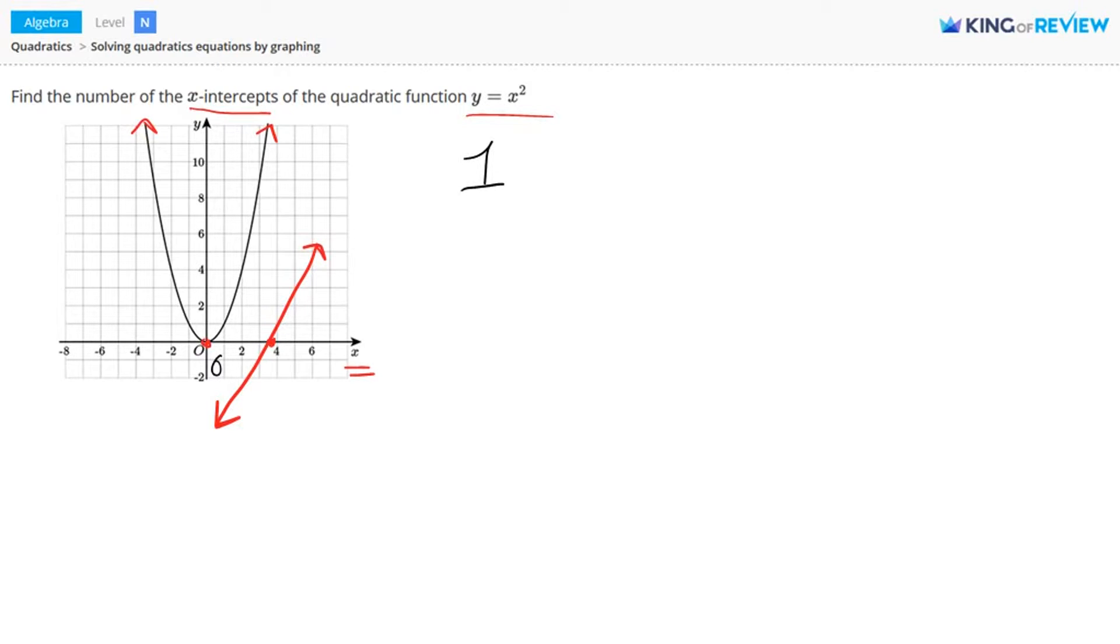You can also solve this problem algebraically. We have the equation y equals x squared. Now if you look at the x-intercept right here, the y-coordinate of an x-intercept is zero because when a graph touches the x-axis, the y value of that point is zero. So at this point here, it will have some x value, but the y-coordinate will be zero.